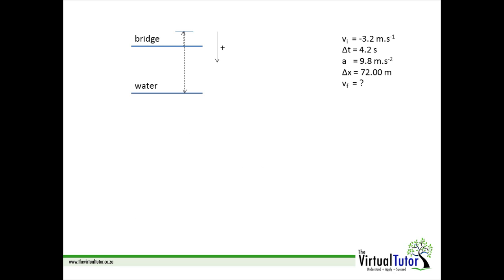Now that we have the displacement, we also need to calculate the final velocity of the rock. This is the simplest equation to use since we have vi and delta t.